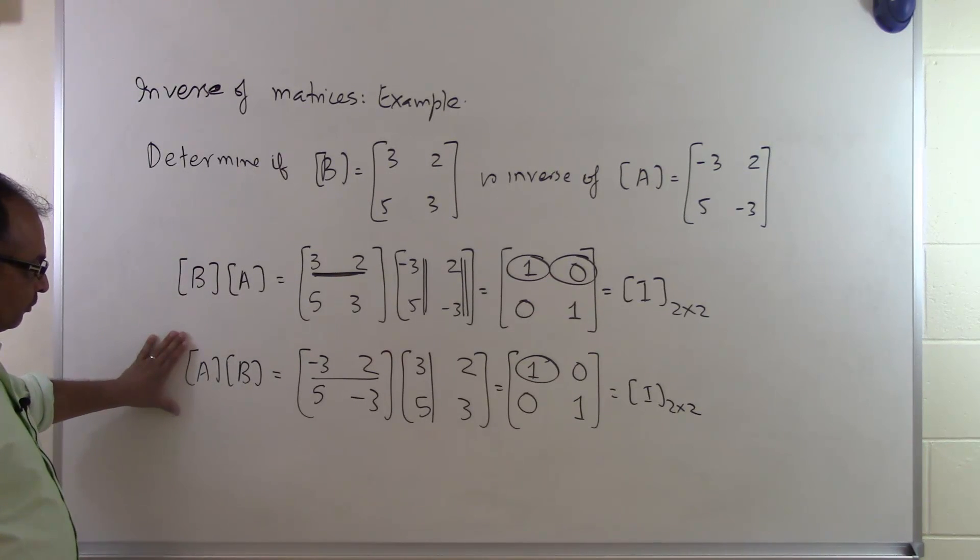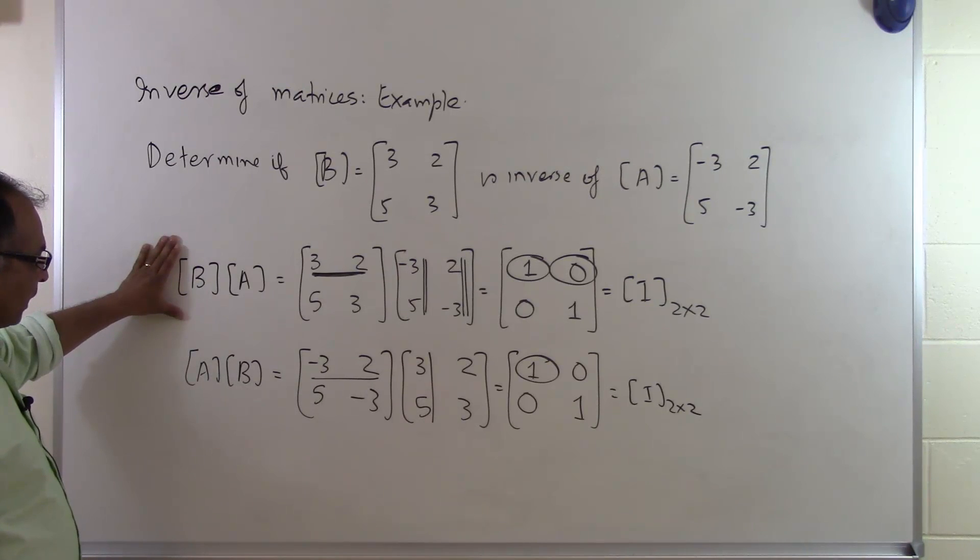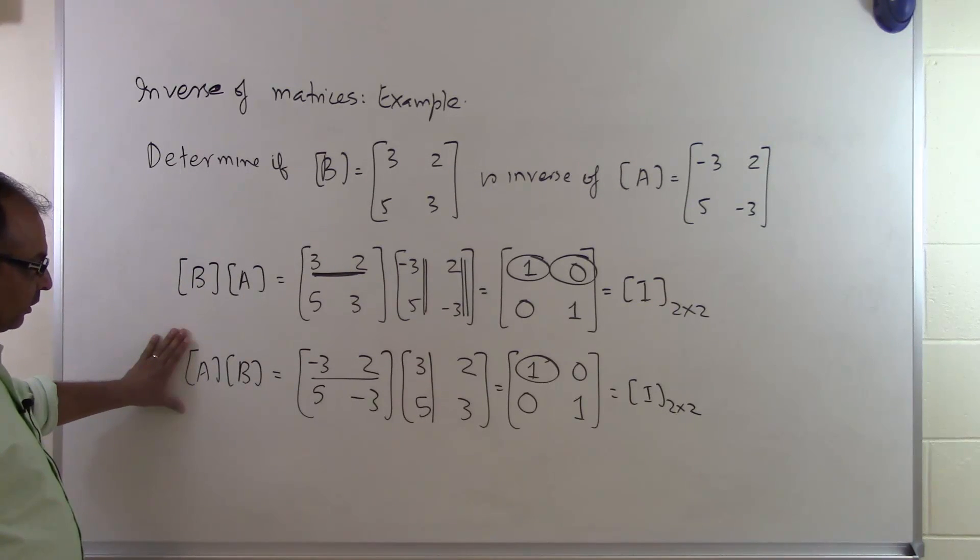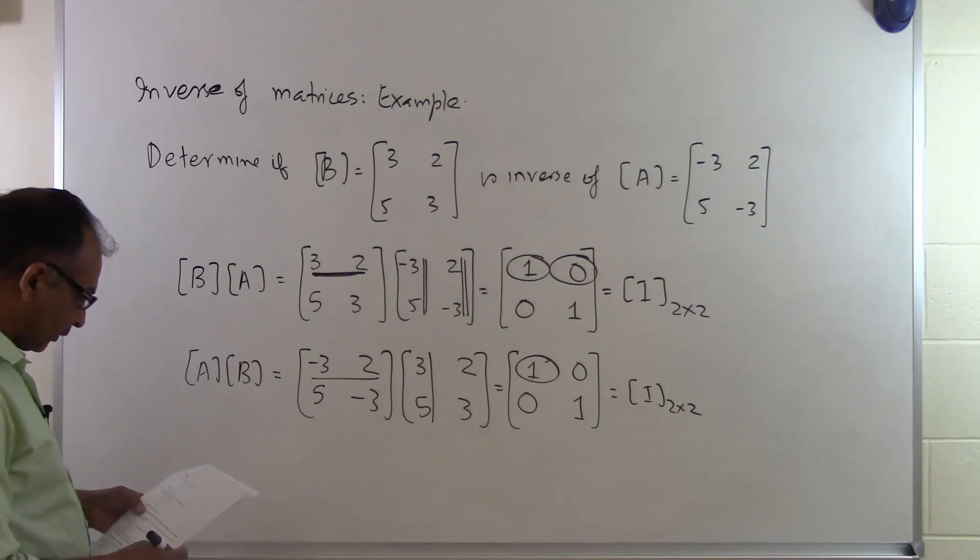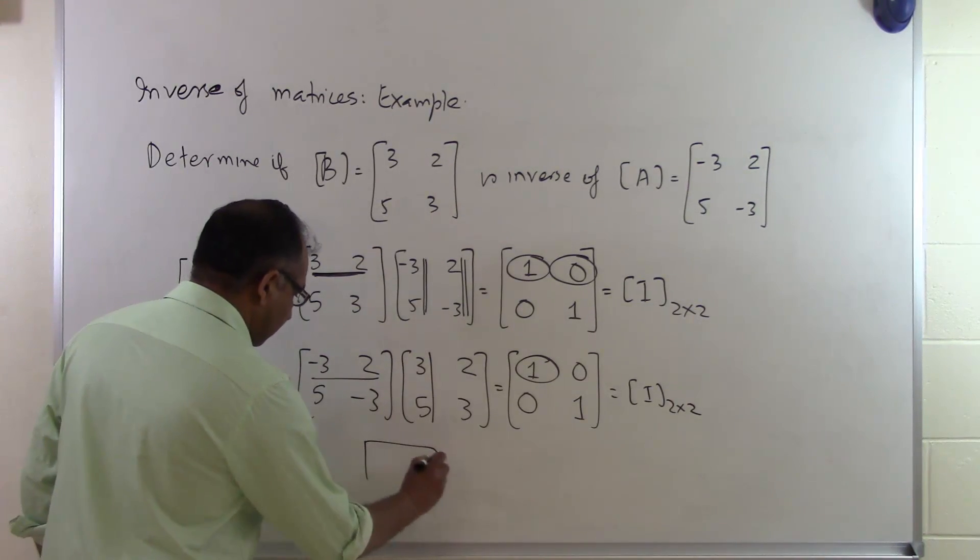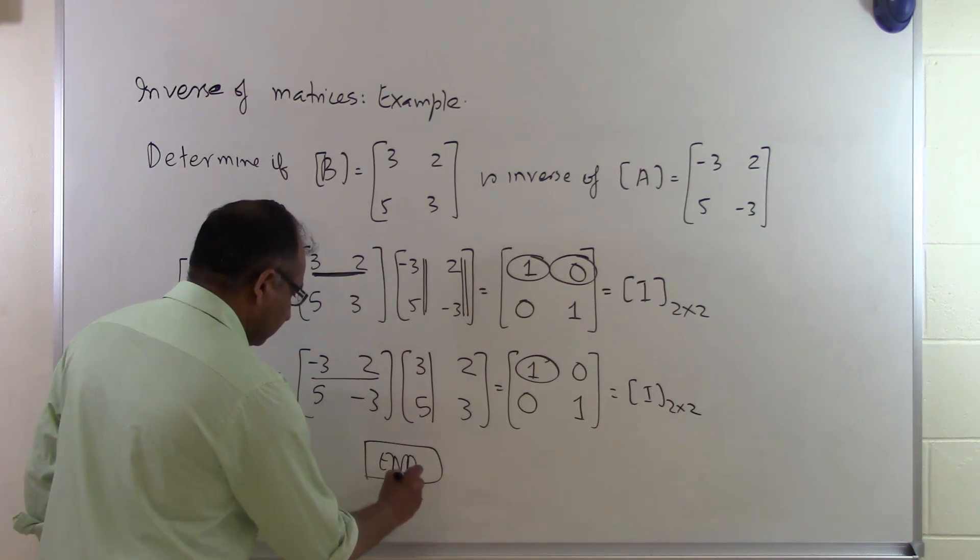This is an extra, this is another way of proving the same thing. So please you either show B times A is the identity matrix or A times B is the identity matrix. That is enough to show that the two matrices are inverse of each other. And that's the end of this segment.